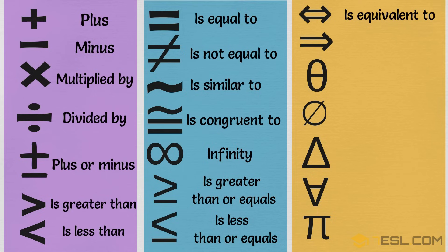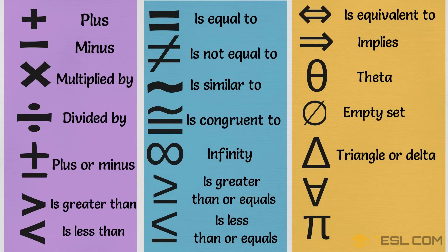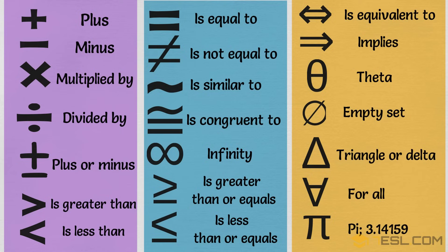Implies. Theta. Empty set. Triangle or delta. For all. Pi — 3.14159.